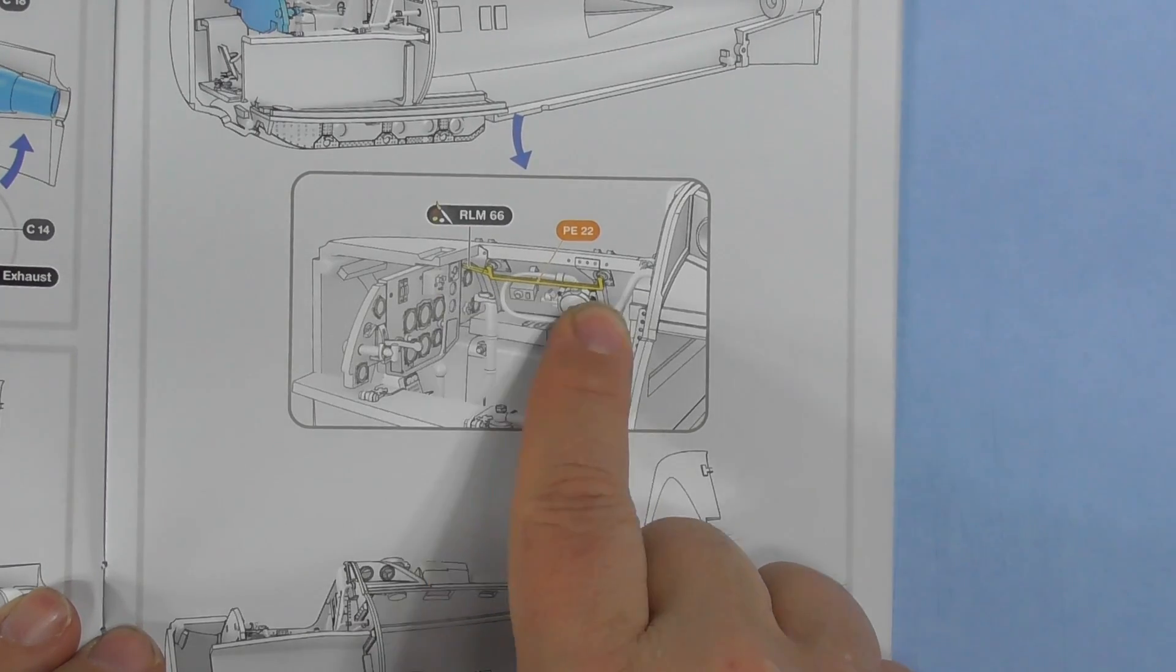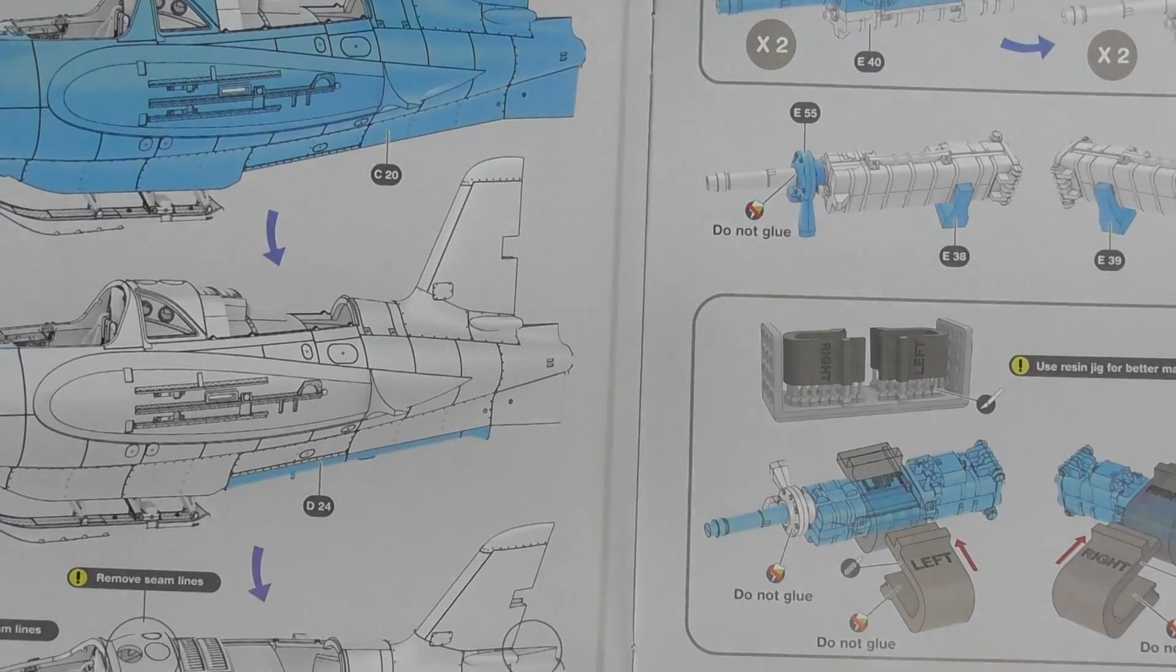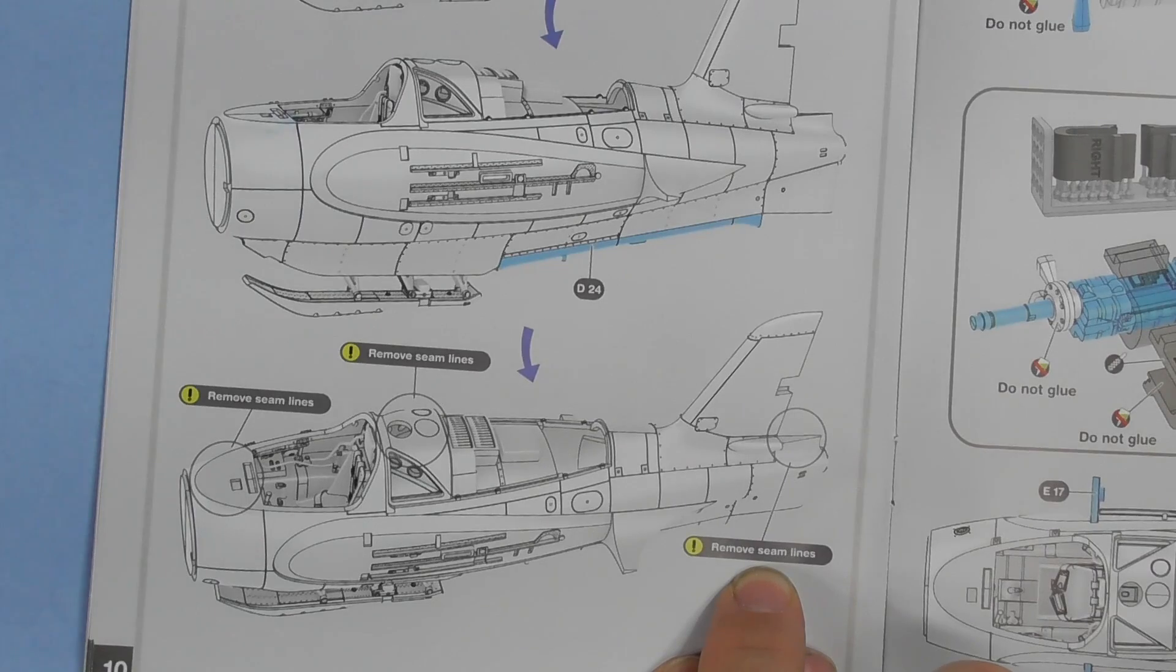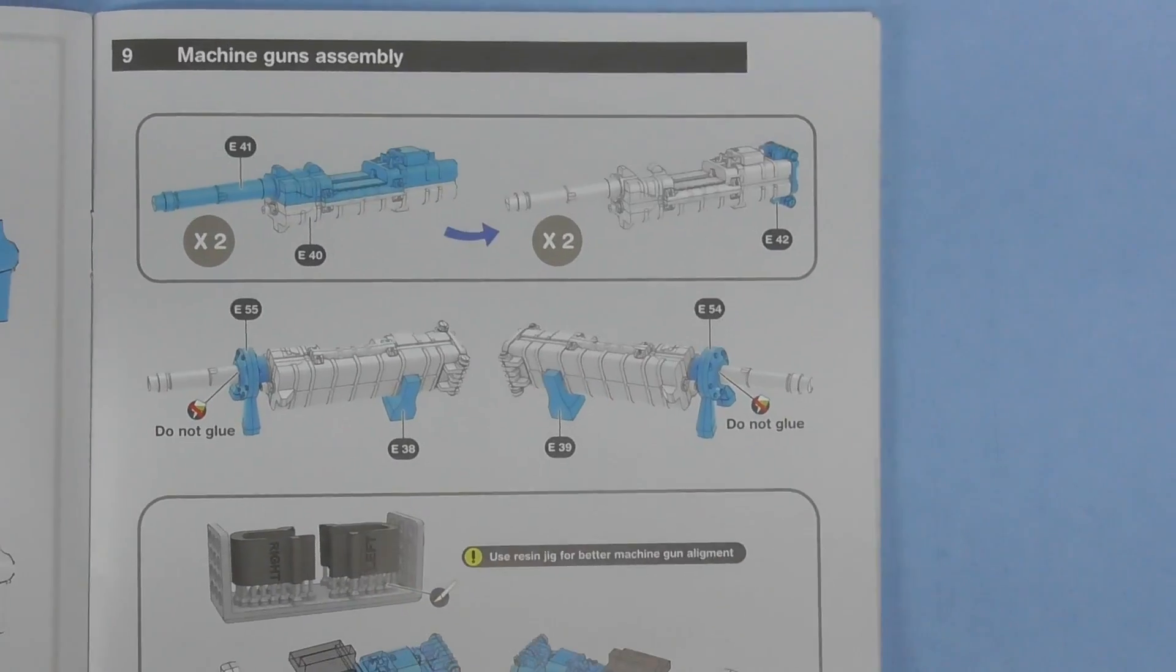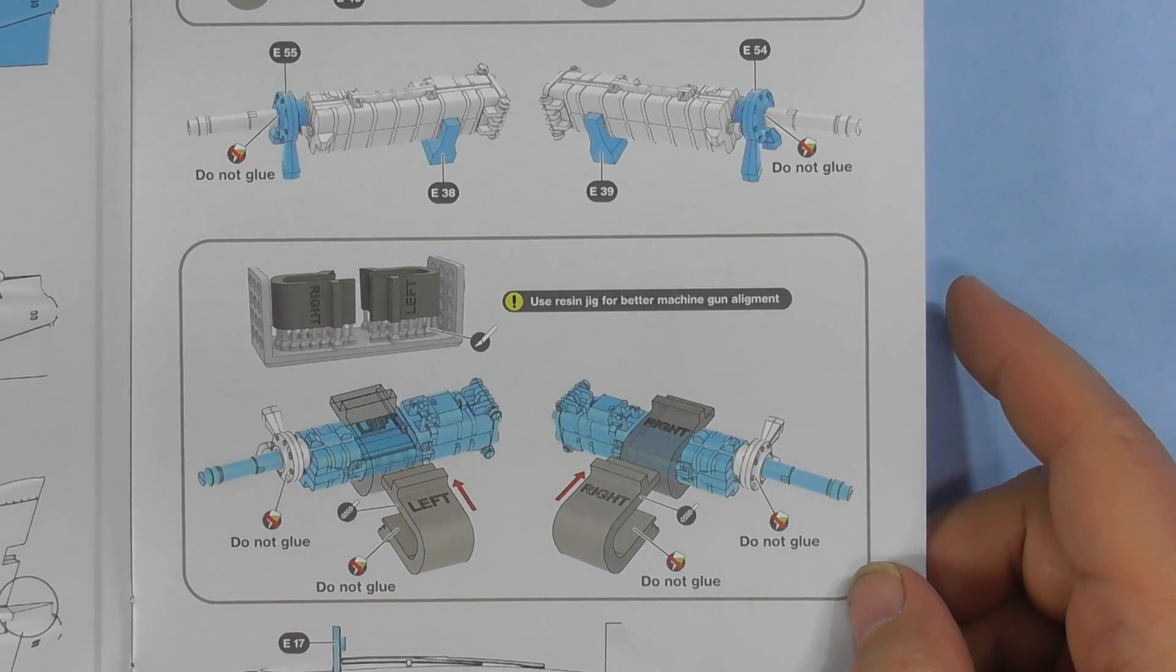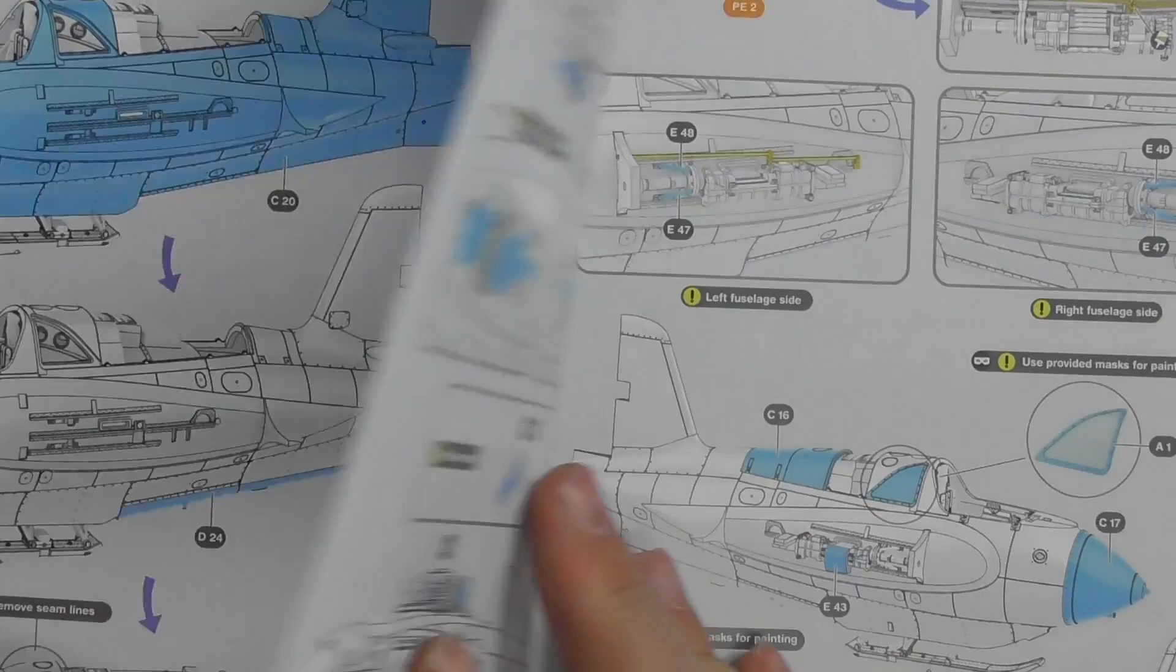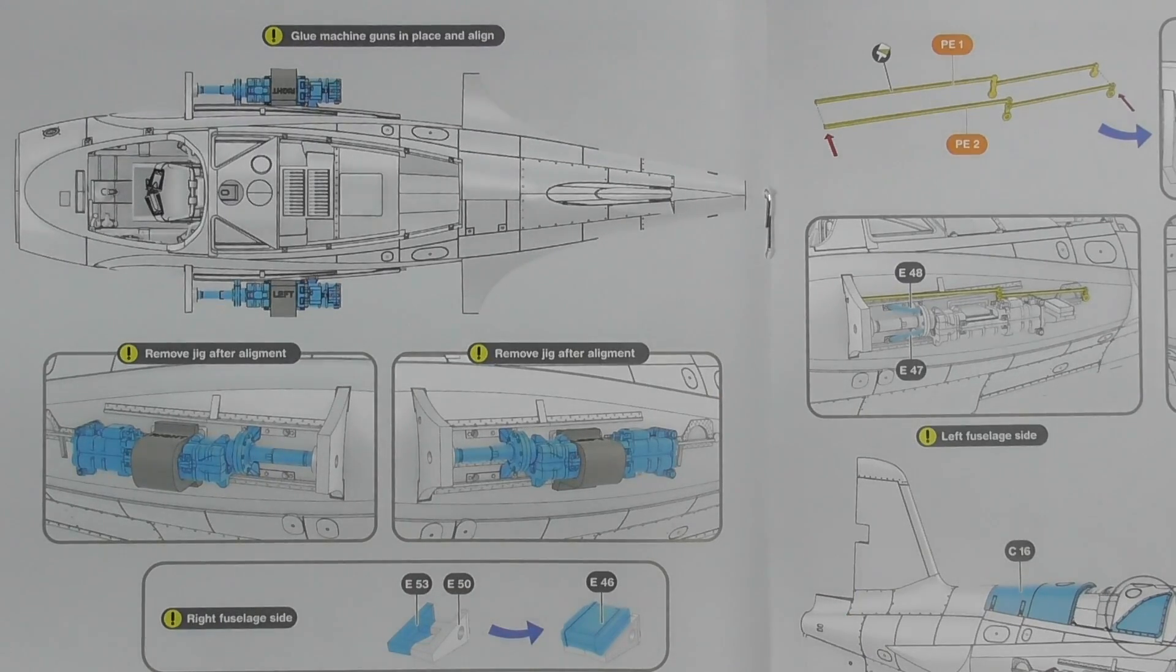There's some more. I wonder if that's like the Me 109 fuel line. I doubt it. There's your skid in extended position. More PE. Remove - it seems they're telling you what seam lines to remove there, there, there. That is a nice touch. RD24 goes on there. Machine gun assembly, so your jigs are labeled left and right. Apparently you're using those - use resin jig for better machine gun alignment. There you go. And glue machine guns into place in a line using your jigs. Very nice touch.